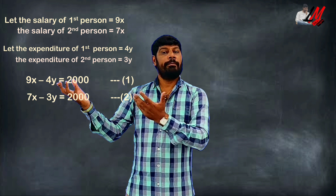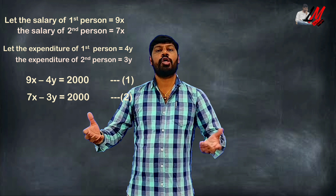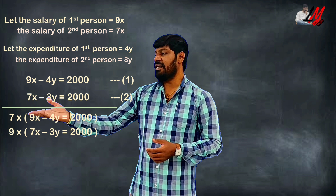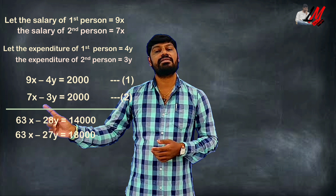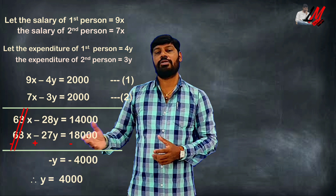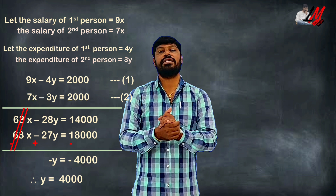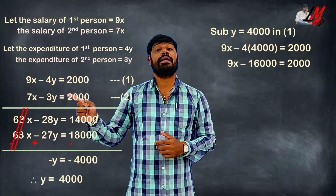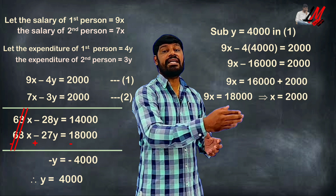We now have a pair of linear equations in two variables and will use the elimination method. The coefficient of x in the first equation is 9 and in the second equation is 7. We multiply to make both coefficients equal — giving 63x in both equations. We subtract and cancel to get the value y equal to 4,000. We substitute y equal to 4,000 into equation 1: 9x minus 4y equals 2,000.